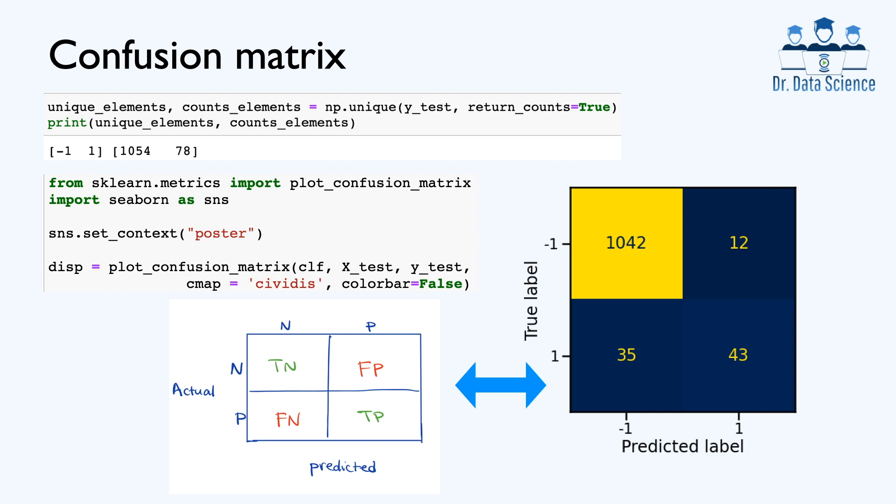However, if we closely look at the second row for positive samples, we observe that almost half of the predicted values are incorrect. This is problematic because finding patients with thyroid disorders is the main objective here, but our trained classifier is almost 50% successful, which is not reliable and acceptable at all. To remember how to interpret the confusion metrics, I also have a simple drawing here that shows true negative and true positive on the main diagonal, and then we have incorrect predictions, which are false positive and false negative.